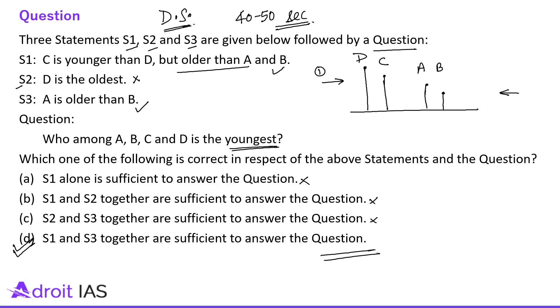This question belongs to Data Sufficiency (DS). The ideal solving time is around 40 to 50 seconds. S2 has no significance — it is an extra statement. The question can be solved with S1 and S3 alone. Together they are sufficient to answer the question.